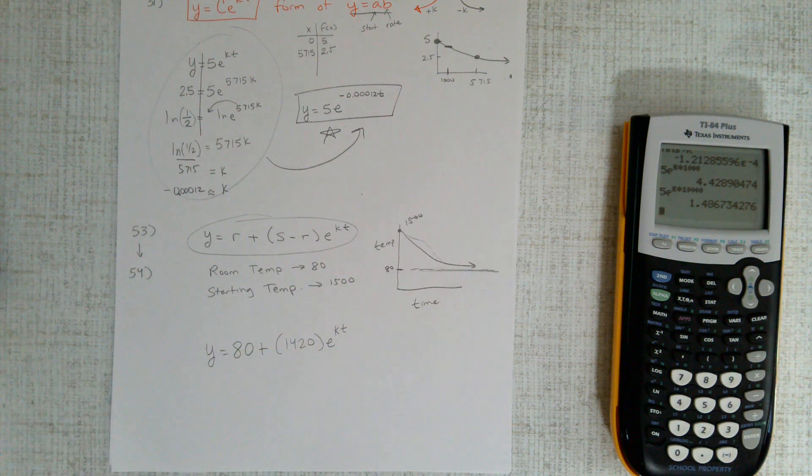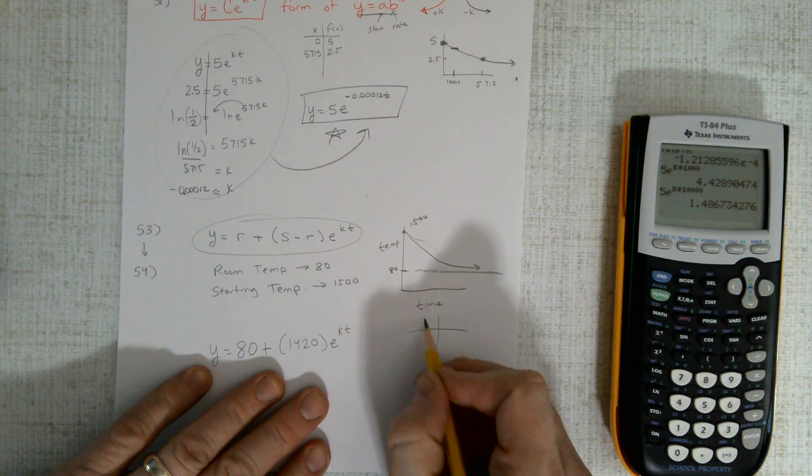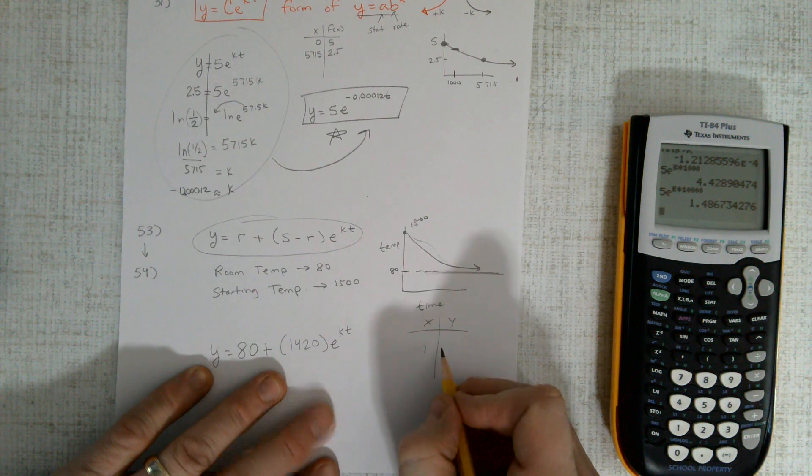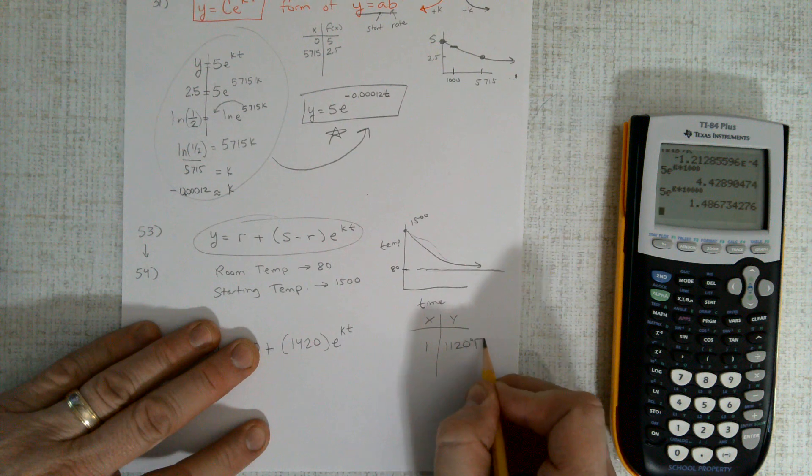And what point do we know? In this problem they give us one point here. Let me read the book—53. After one hour, so they do give us this one point, they say after one hour the temperature has cooled to 1120.